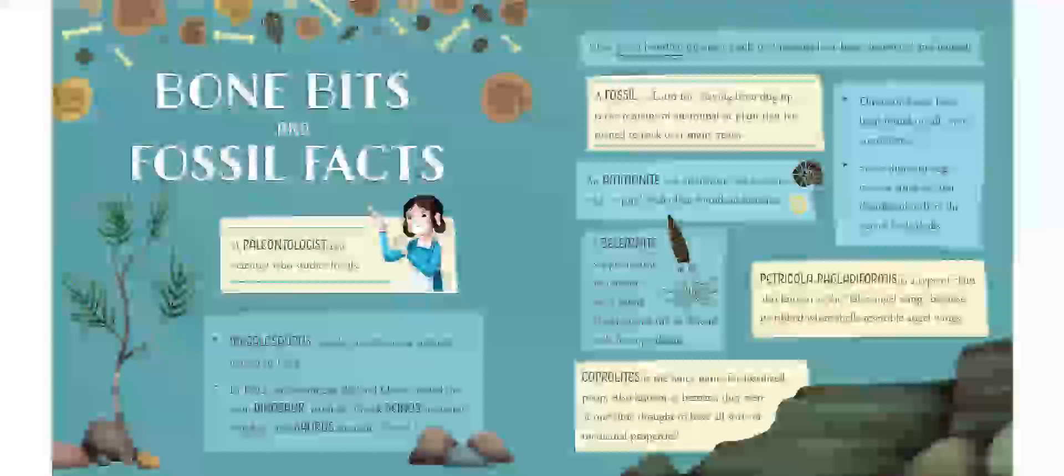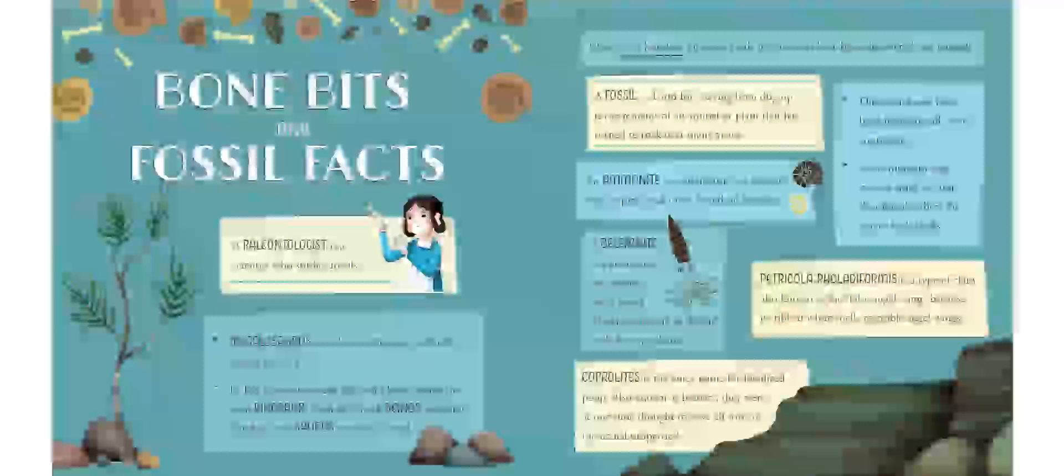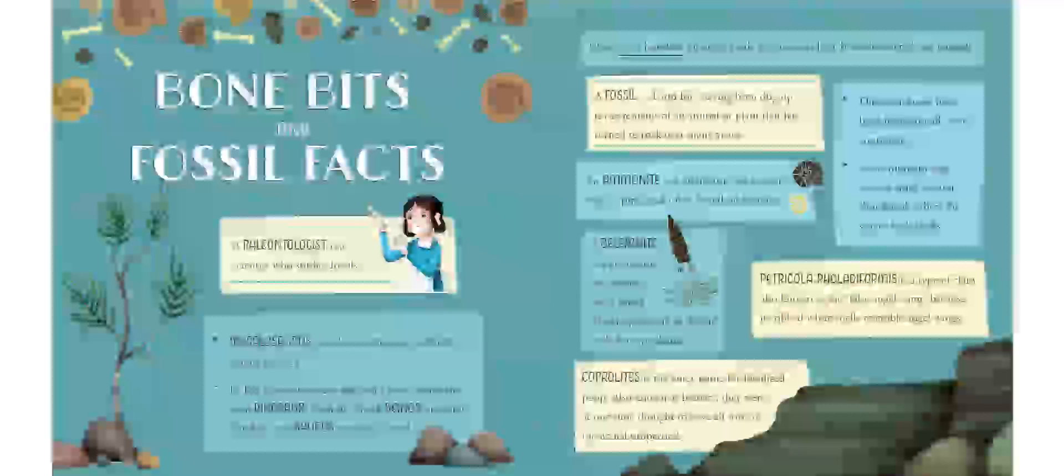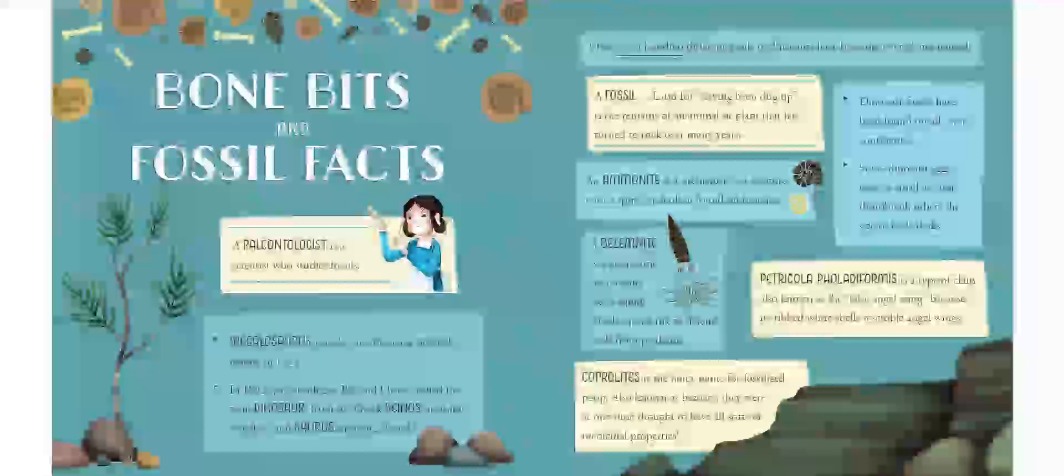Megalosaurus was the first dinosaur officially named in 1824. In 1842, paleontologist Richard Owen coined the term dinosaur from the Greek dinos, meaning terrible, and saurus, meaning lizard. Over 700 different kinds of dinosaurs have been discovered and named.